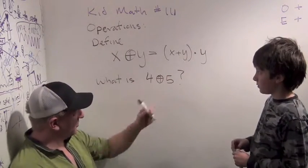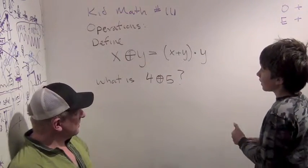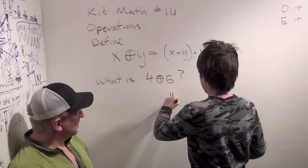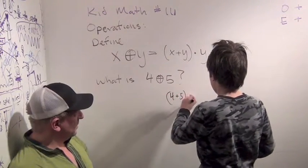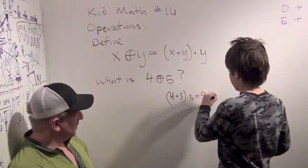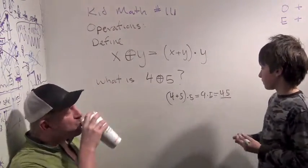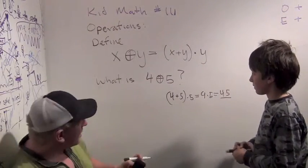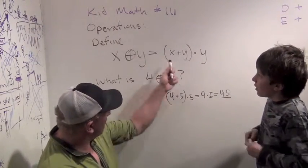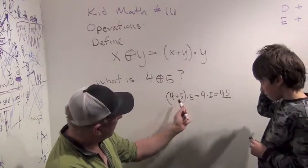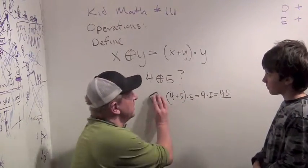So can you tell me what 4 circle plus 5 means? Well, it means 4 plus 5 times 5, which is 9 times 5, which is 45. Alright, good job. So 4 plus 5 times 5, or 9 times 5, which is 45.